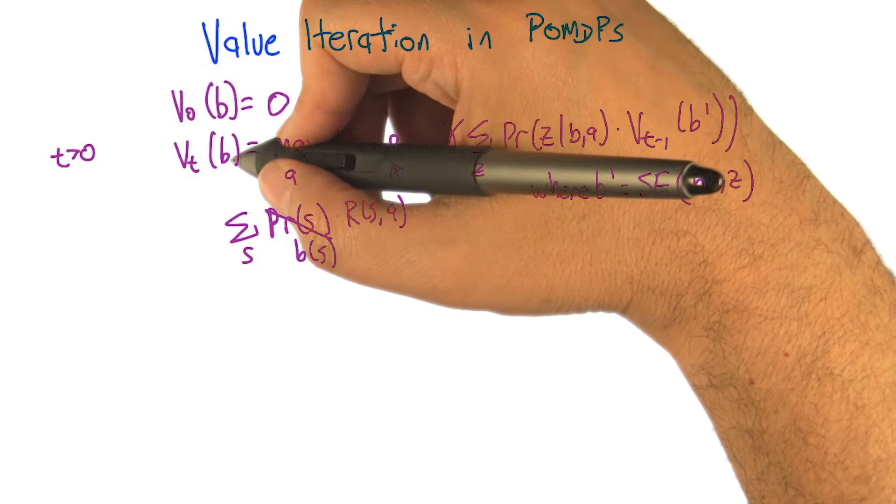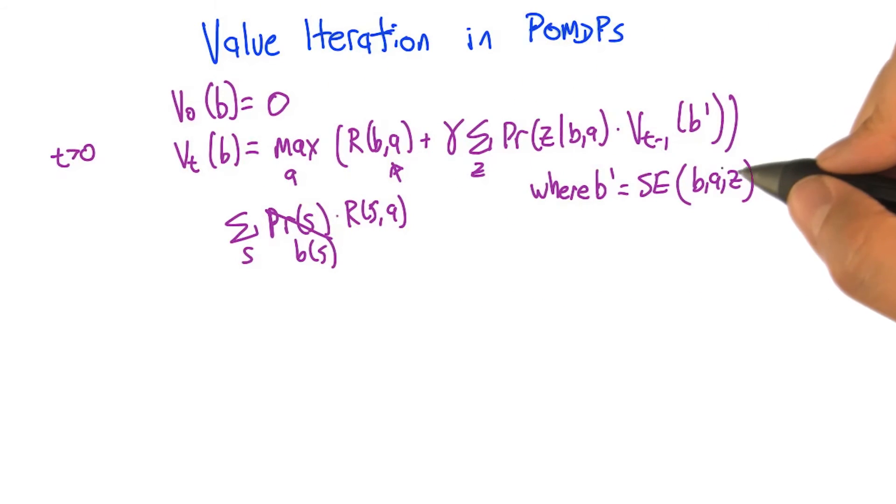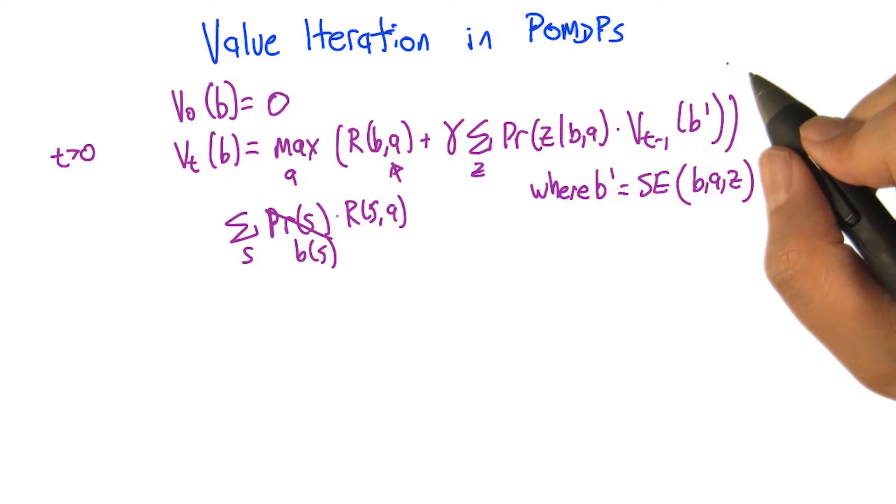All we would need is a loop that would say, for all belief states, do this update. It's just that there's an infinite number of them, so that would not terminate. Yeah, but you could write it in really just a few lines of code. Yes, you could write an infinite loop in very few lines of code. It's beautiful, really.